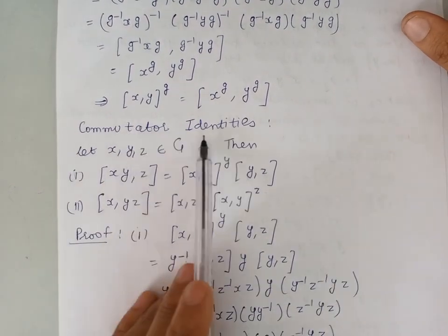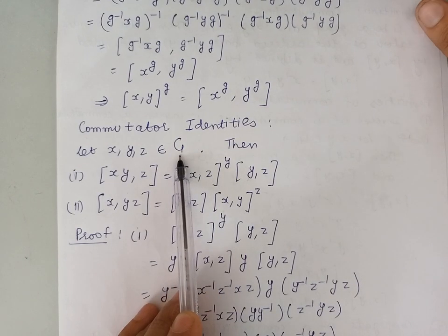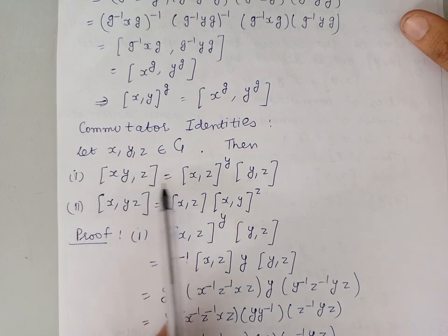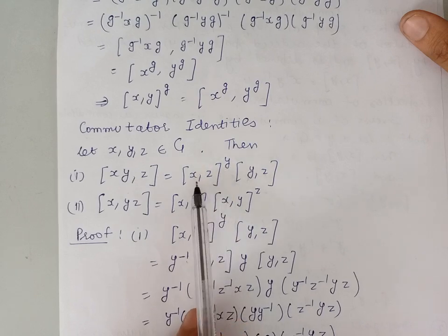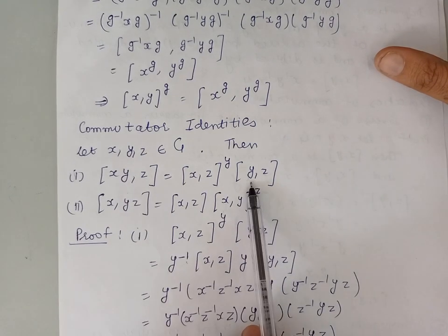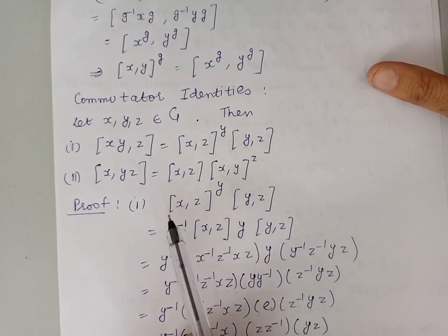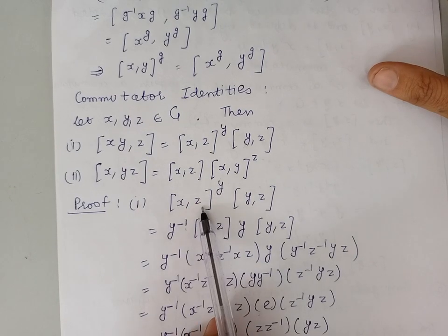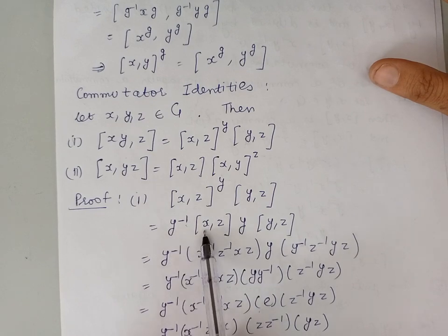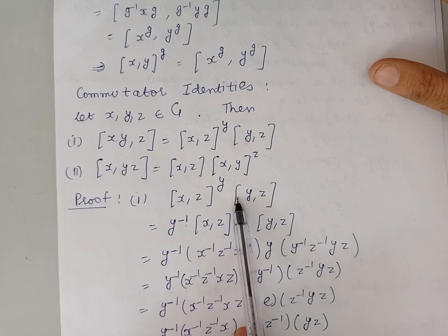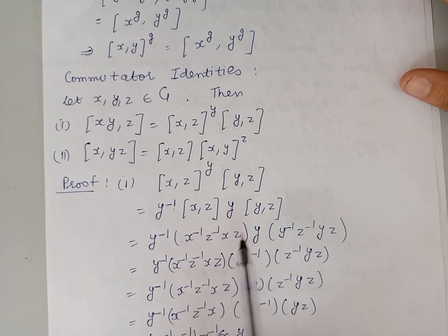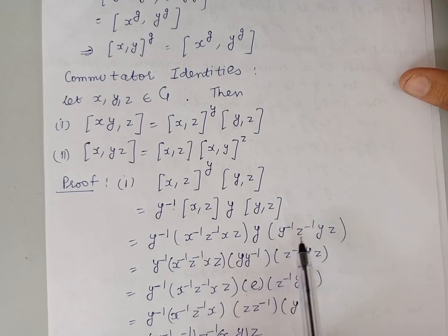Next we prove some commutator identities. Let g be a group and take three elements x, y, and z from g. Then the commutator [xy, z] equals the product of the conjugate of [x, z] with respect to y, times the commutator [y, z]. To prove this identity, let us start from the right-hand side and consider the conjugate of [x, z] with respect to y times [y, z]. By definition of conjugate, this is y inverse · [x, z] · y · [y, z]. By definition, [x, z] = x inverse z inverse xz, and [y, z] = y inverse z inverse yz.